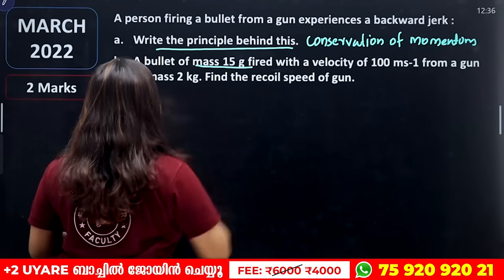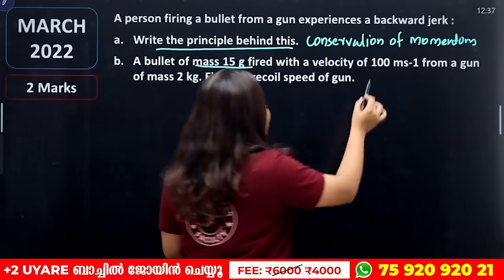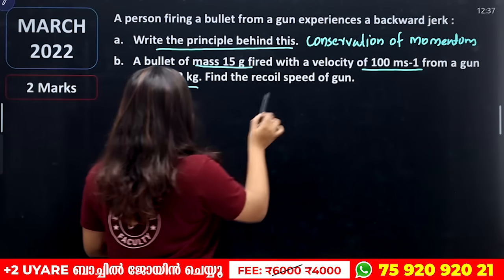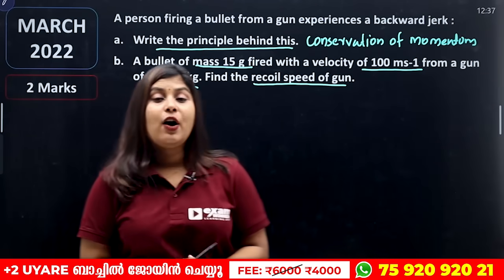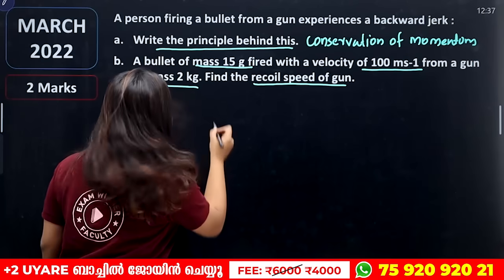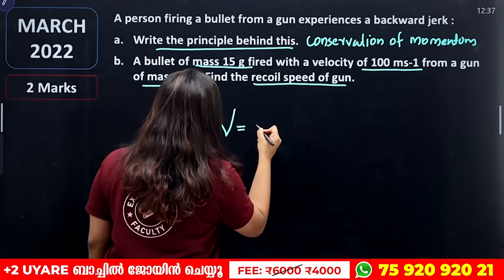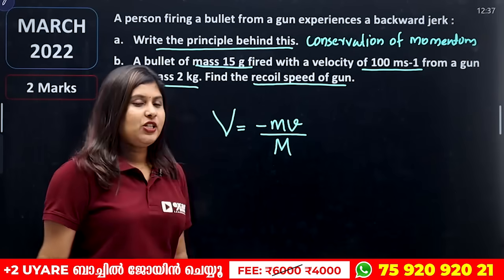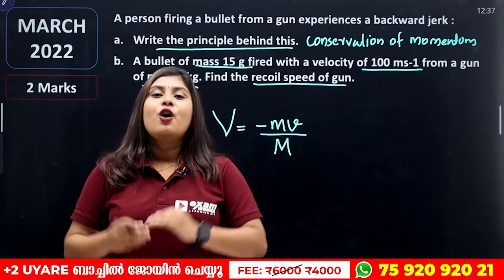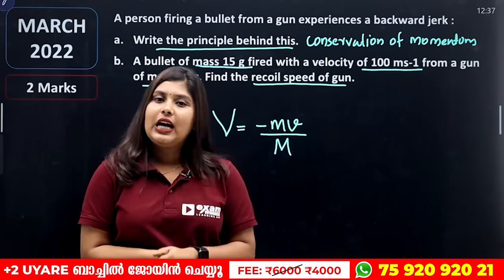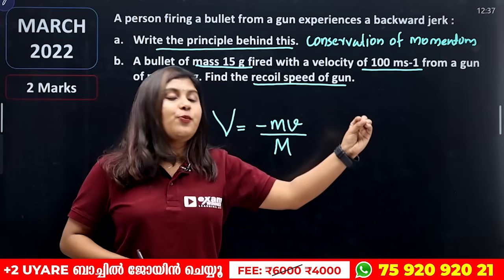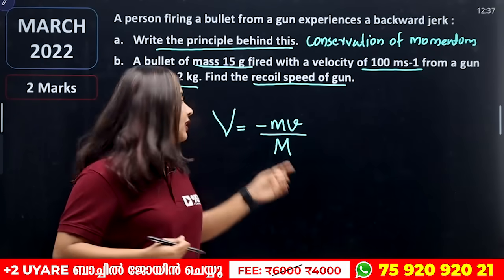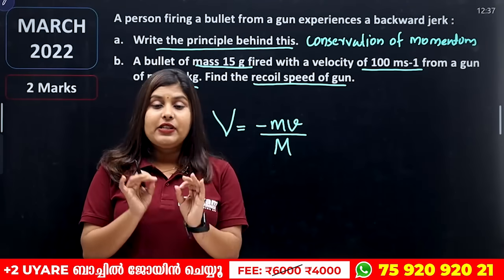A bullet of mass 15 grams is fired with a velocity of 100 meters per second from a gun of mass 2 kg. Find the recoil speed of the gun. The recoil velocity equation is V equals minus small m times small v divided by capital M. The negative sign indicates the opposite direction.